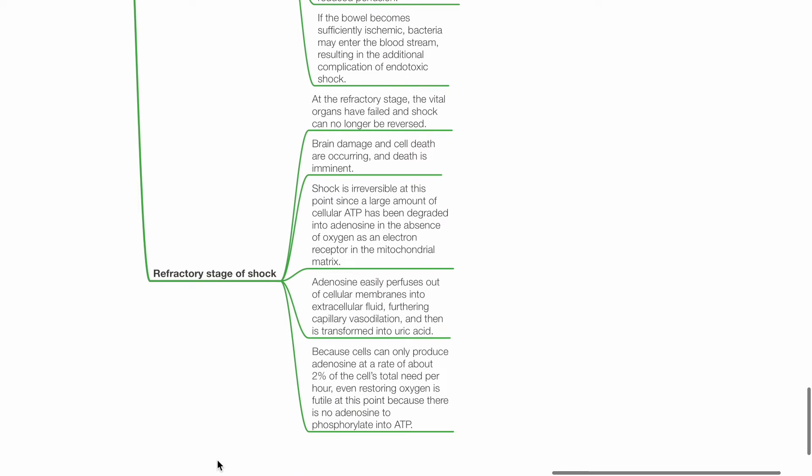At the refractory stage of shock, vital organs have failed and shock can no longer be reversed. Brain damage and cell death occurs, death is imminent, shock is irreversible. Large amounts of cellular ATP has been degraded into adenosine in the absence of oxygen as an electron receptor in the mitochondrial matrix. Adenosine easily perfuses out of cellular membranes into extracellular fluid, furthering capillary vasodilation and is transformed into uric acid. Because cells can only produce adenosine at a rate of about 2% of the cell's total need per hour, even restoring oxygen is futile at this point because there is no adenosine to phosphorylate into ATP.